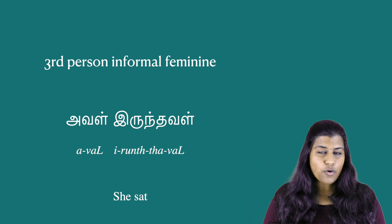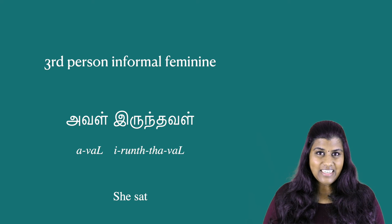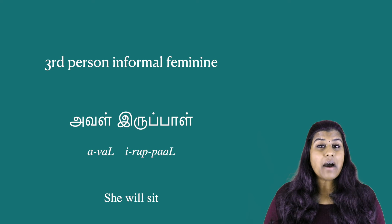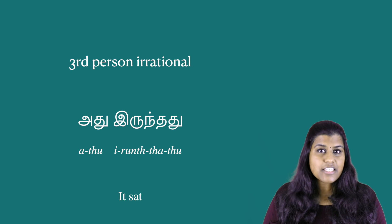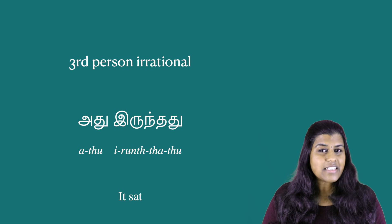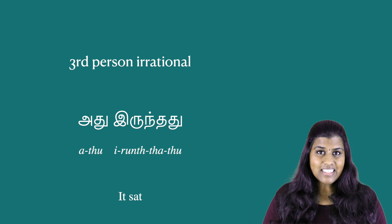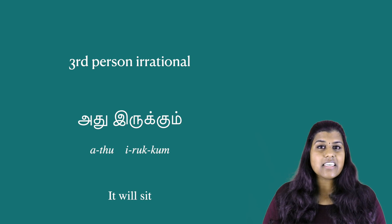Next we've got the informal version for female. Aval irundal. Aval irukkiral. Aval irppal. Next up we've got 'adhu', which is used for animals and inanimate objects. Adhu irundadhu. Adhu irukkhudhu. Adhu irukkradhu.